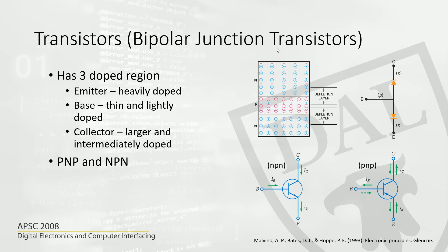Here we are looking at another semiconductor component which is often used, called a transistor. There are different types of transistors, but a very basic one is called a bipolar junction transistor — that's what we will start with. In a bipolar junction transistor, you have three layers: an N-type layer, a P-type layer, and another N-type layer.